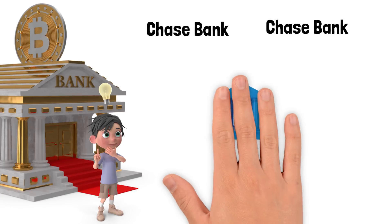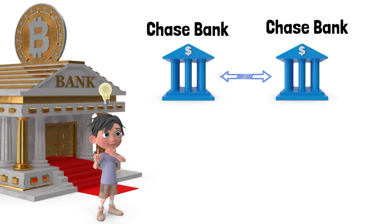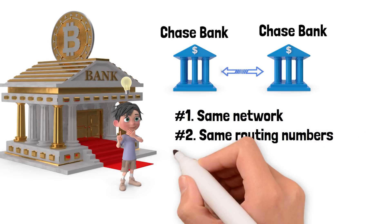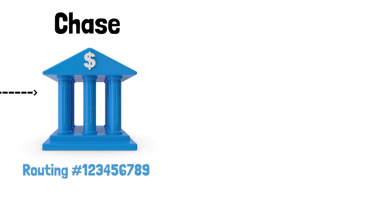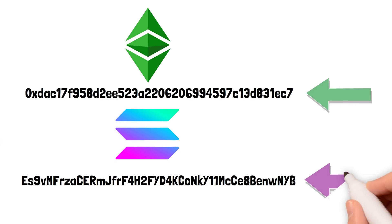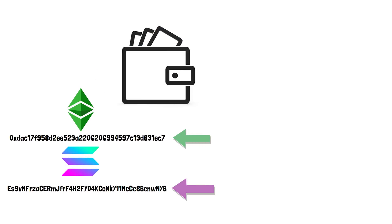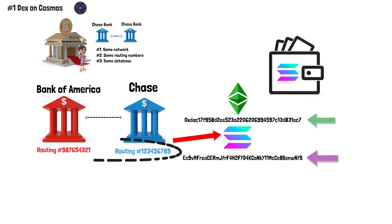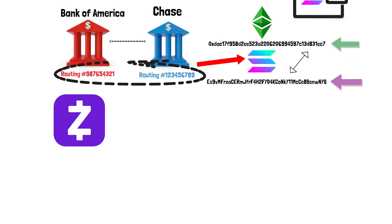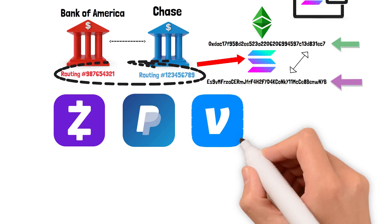Think about crypto ecosystems like banks. If you and I both have a bank account at Chase, it's easy to send money because we're on the same network with the same routing numbers. But if you had Bank of America and I had Chase, our routing numbers wouldn't match. Similarly, when you create a crypto wallet on Ethereum, it's designed for ERC-20 tokens. Sending Solana tokens to an Ethereum wallet would be like sending money between different banks — you'd need a third party like Zelle, Venmo, or PayPal.